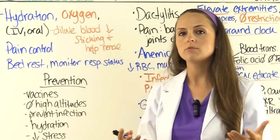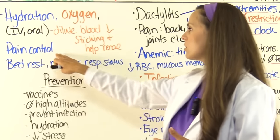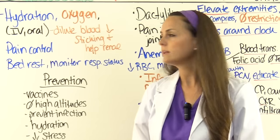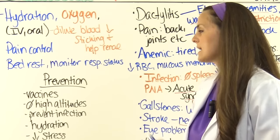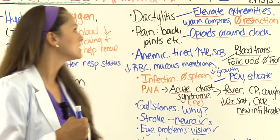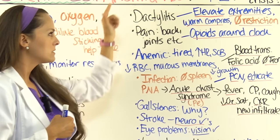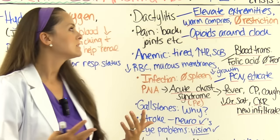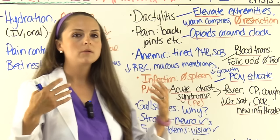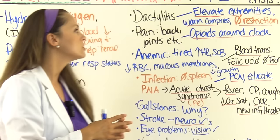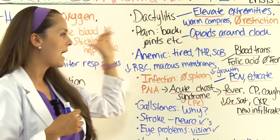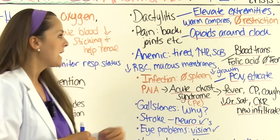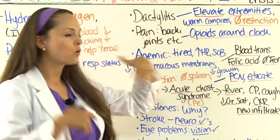Pain control is a huge priority — this condition is very painful. Patients will be on bed rest, and respiratory status must be monitored due to risk for acute chest syndrome. Dactylitis — swelling of hands and feet — is mainly seen in infants; elevate those extremities to promote blood flow. Pain from ischemia occurs throughout wherever these sickling episodes happen, and the best treatment is opioid medications around the clock, not PRN.